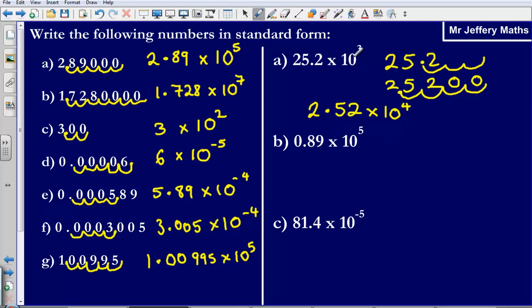So 25.2 times 10 to the power of 3 as a number written in standard form would be 2.52 times 10 to the power of 4.